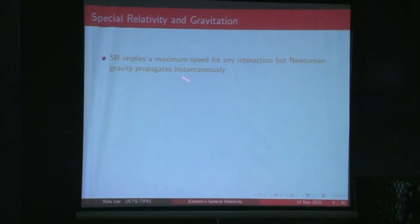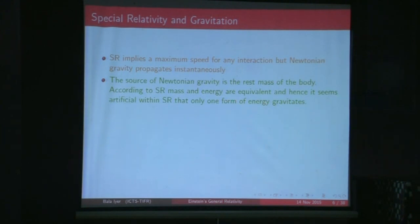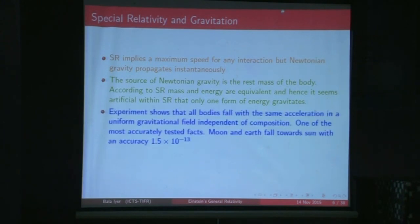Special relativity implies that you cannot have infinite speeds — there is a maximum speed for any interaction. But because Newtonian gravity is action at a distance, gravity propagates almost instantaneously. Furthermore, if you believe in special theory of relativity, mass and energy are equivalent, so it becomes artificial that only one form of energy — rest mass — has a gravitational interaction. This leads to an important point which is the clue to what I will talk about next.